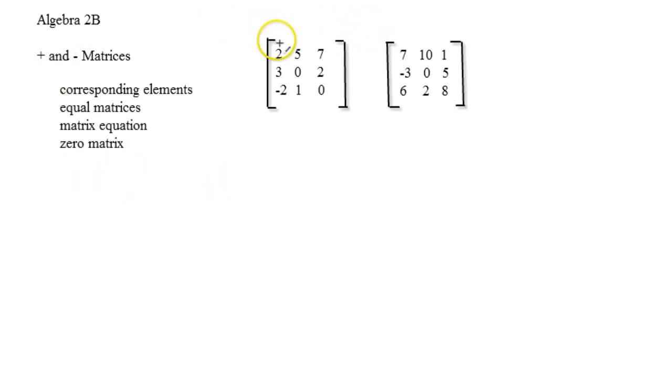First off, corresponding elements have the same address. There are such things as addresses in matrices. For example, A sub 1,1 would be the first row, first column, and that number would actually be 2 in this one. Let's define this as matrix A and we'll define this one as matrix B.